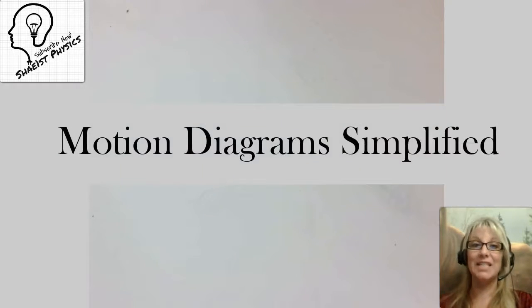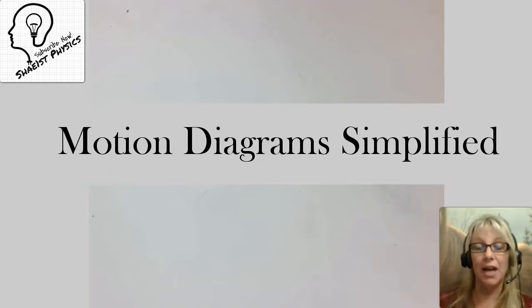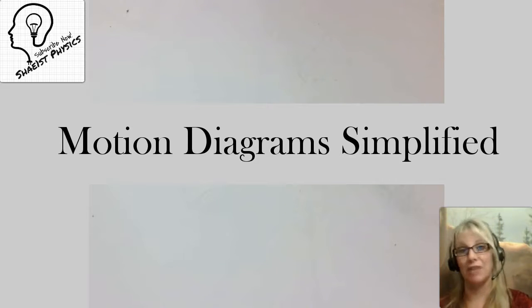A motion diagram is yet another way to represent the motion of an object. For me the easiest way to deal with translating between a position time graph and a velocity time graph, an acceleration time graph, is to remember that when you're dealing with them